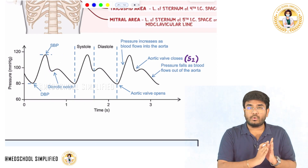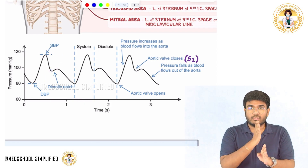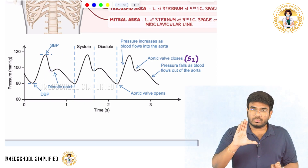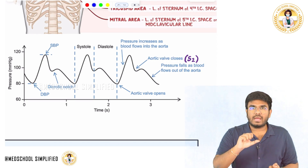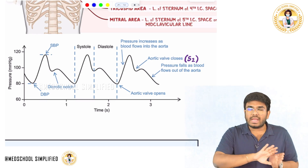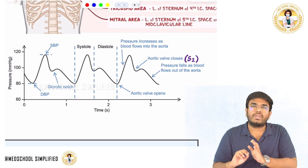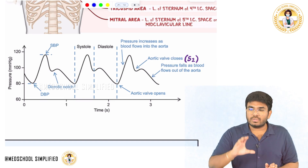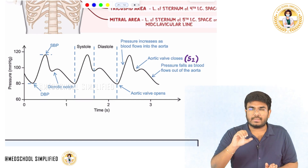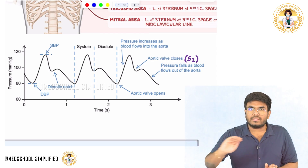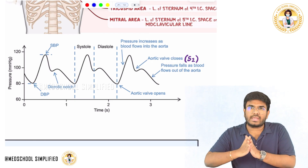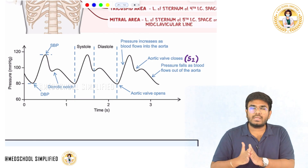After the closure of the aortic valve, the aorta will try to squeeze and push the blood forward into the arteries. The aorta is squeezing; when the aorta is squeezing, blood will be forwarded. The blood is going to be pushed into the arteries, and some blood is also pushed back towards the heart.